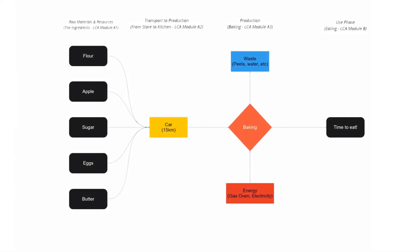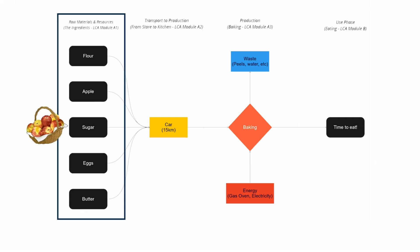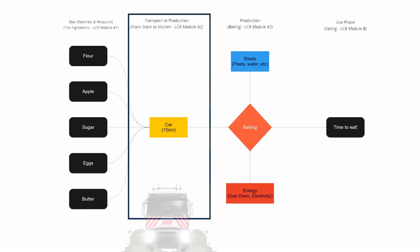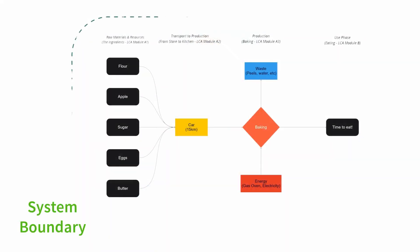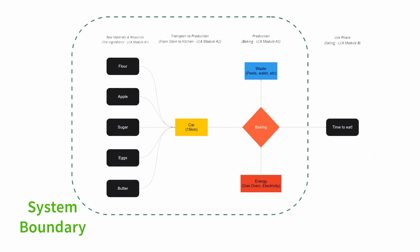There are actually two important things about the flowchart. The first is that it needs to show all inputs and outputs related to your product system — so the raw materials, the transportation of these raw materials, the processing of these raw materials. It also needs to show a system boundary, indicating where my system ends — what I take into account and what I'm actually excluding.